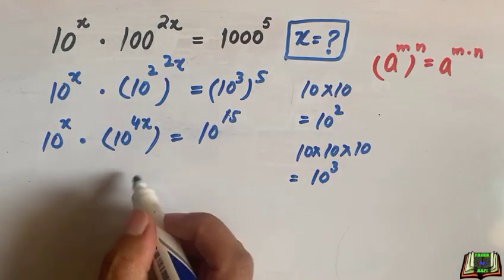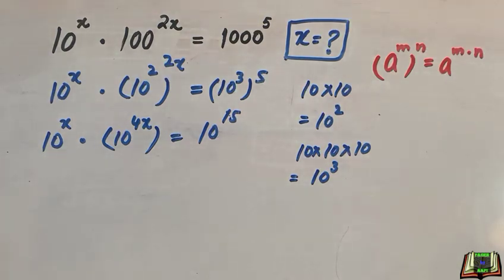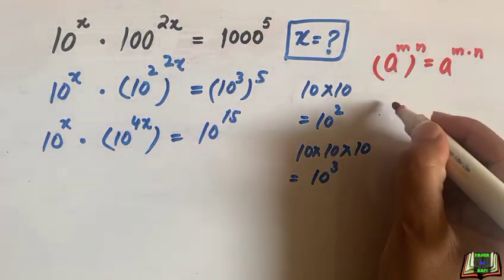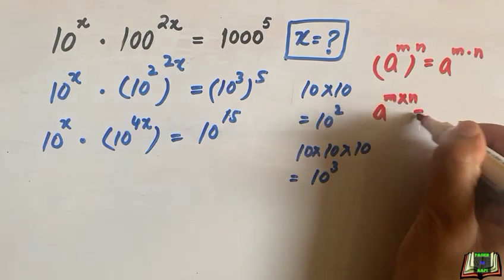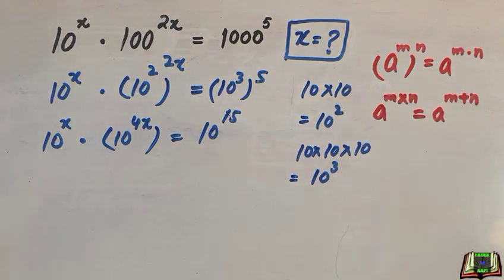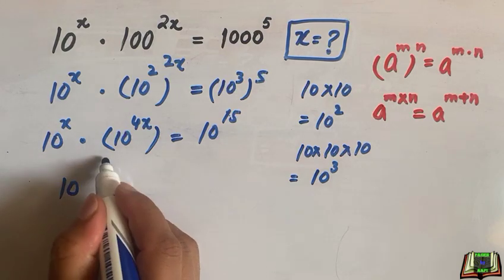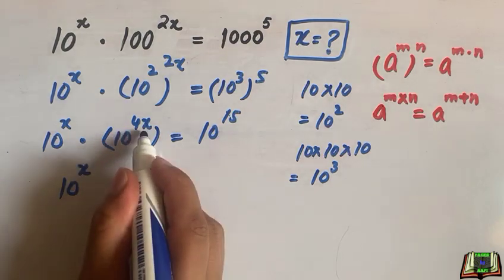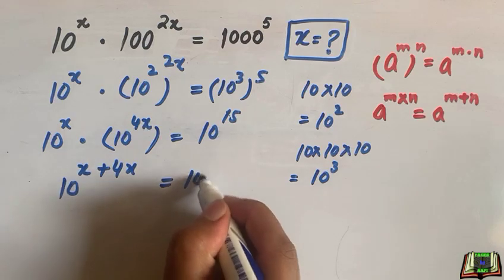We can simply add the two powers if two exponential functions with the same base are multiplying. Here we are going to use product of powers rule that says if a to the power m times a to the power n, then we can add the powers a to the power m plus n. So we are going to add the two powers with the same base, x plus 4x is equal to 10 to the power 15.